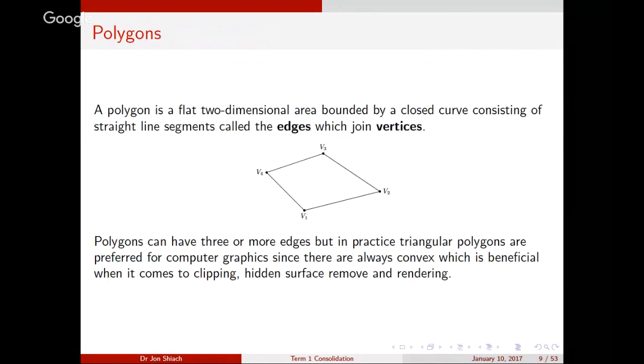Okay, so that's fundamentals, coordinates and vectors. This brings us on to polygons. Now, in three-dimensional graphics, which obviously most of the graphics applications nowadays are, we deal with polygons. Polygons are flat, two-dimensional areas bounded by a closed curve. And the edges of your polygon are straight lines, so these are called edges, which join vertices. Polygons can have three or more edges, but for simplicity, in real-life practical applications of graphics, we tend to only use triangles.